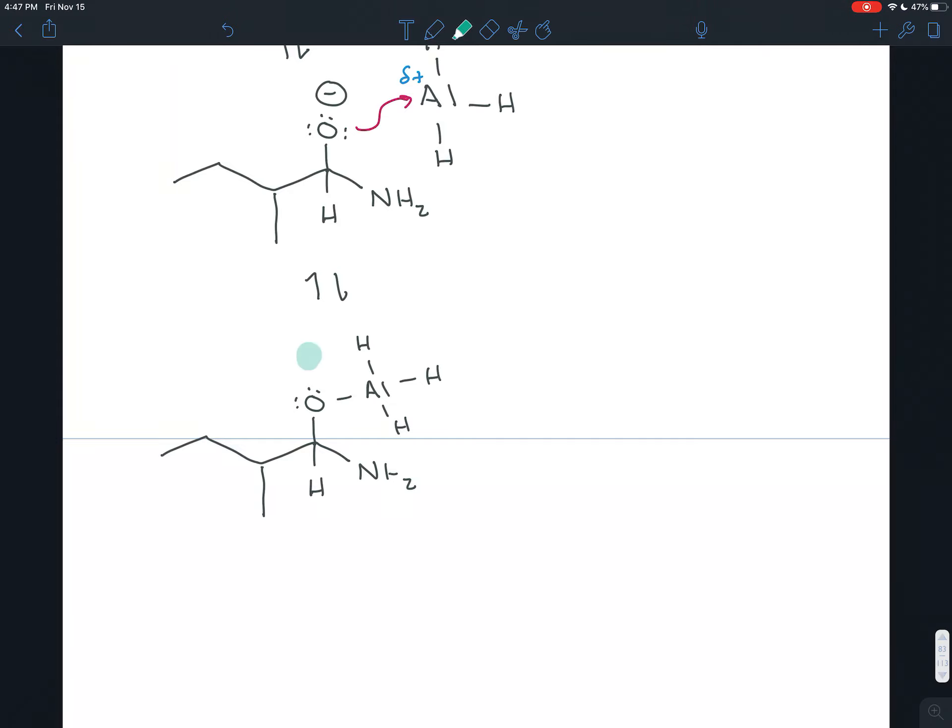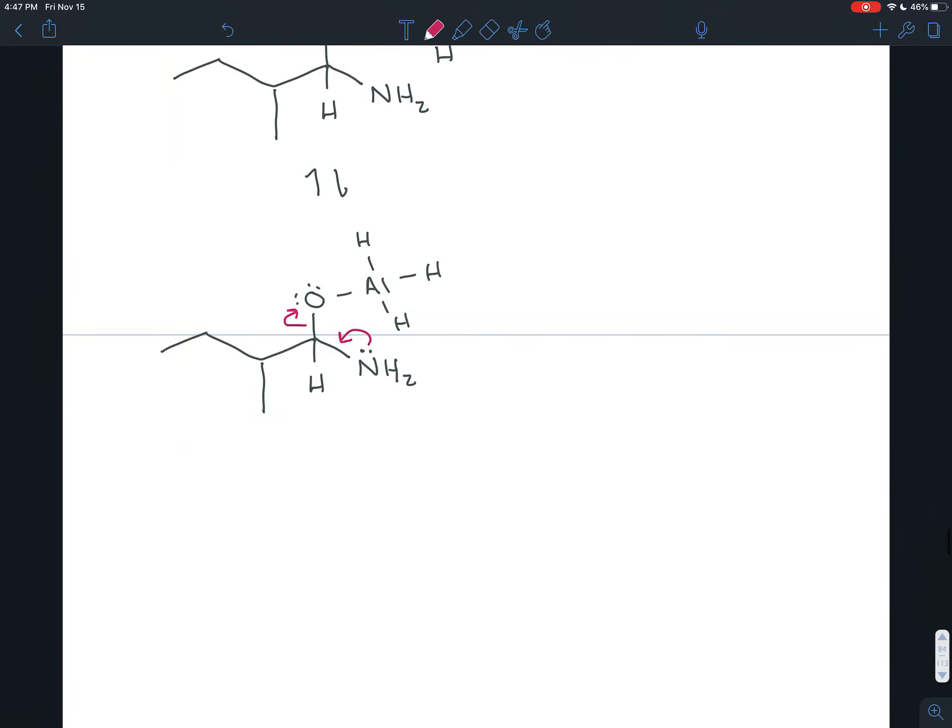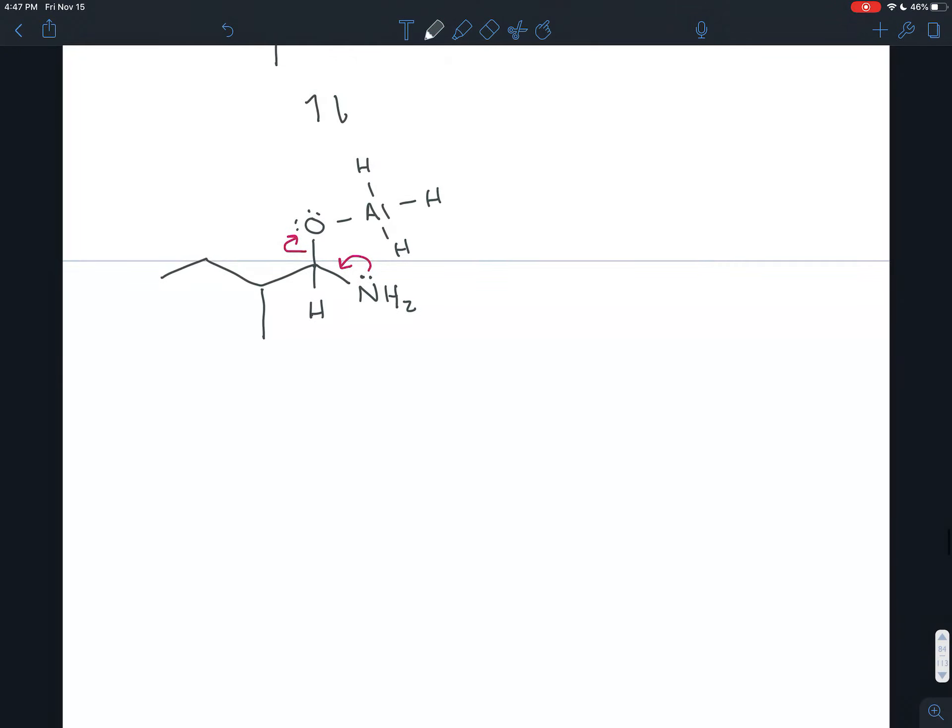And this whole thing can act as a leaving group. So the nitrogen with its lone pair feels the slightly positive charge here. After all, that carbon is bonded to two electronegative elements, pulling electron density away. And so it swoops in to form a pi bond and kicks that leaving group off. So it's loss of a leaving group. We've seen this many times, especially in an imine formation, one that looks a lot like this.